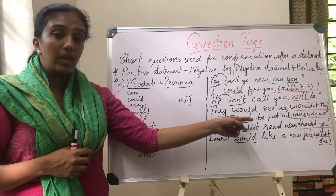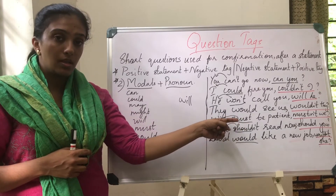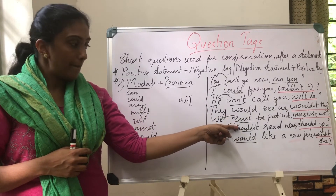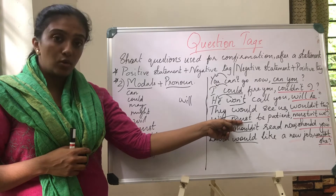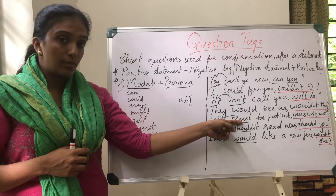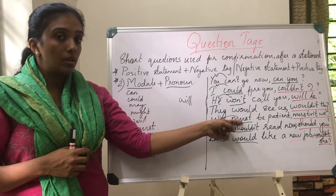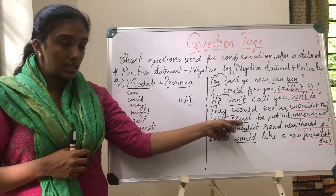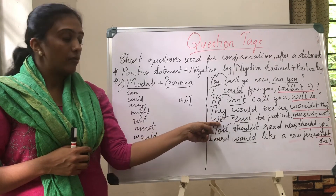'We must be patient.' Must is the modal — it's a positive statement. So the tag becomes: mustn't we.